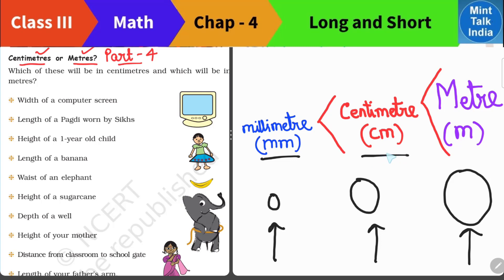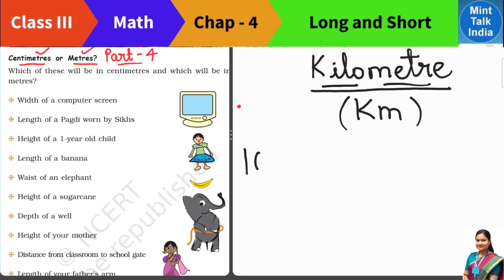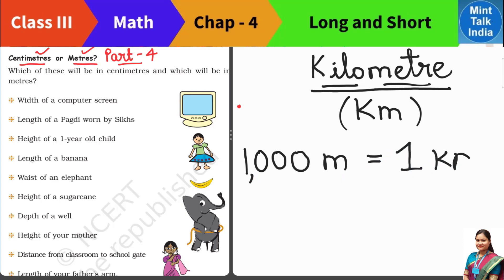There is also a bigger unit. If I take a long line from your home to your school, I will not measure that with a ruler or a meter scale. We use an even bigger unit called the kilometer, and its short form is km. If we connect 1,000 meters — that is 1 followed by 3 zeros — we get 1 kilometer.